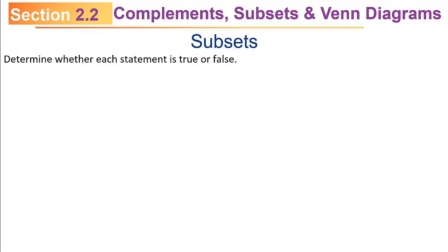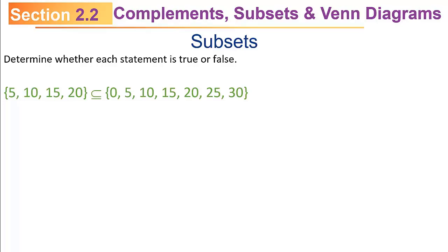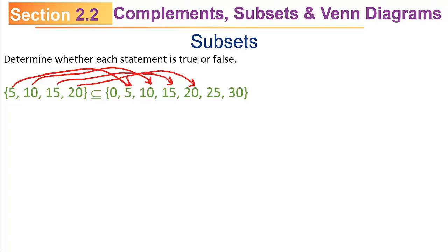Let's do some true-false. Is the set {5, 10, 15, 20} a subset of {0, 5, 10, 15, 20, 25, 30}? Start on the left and element by element look for that same element on the right: 5 is in the right set, 10 is in the right set, 15 is in the right set, and 20 is in the right set. That's what you need to show. So that statement is definitely true.